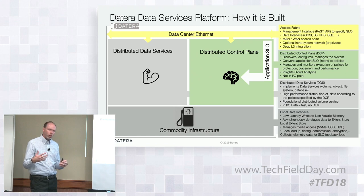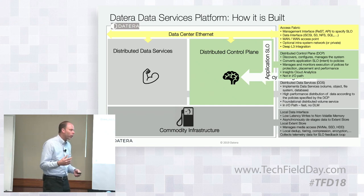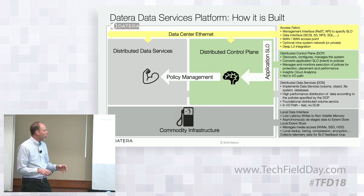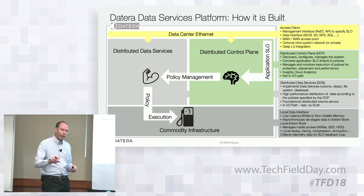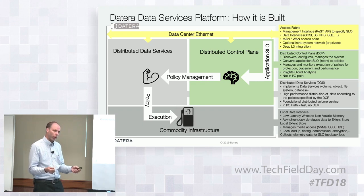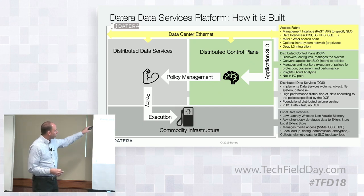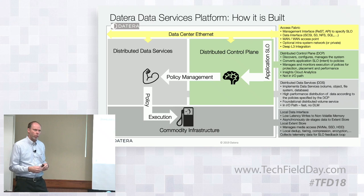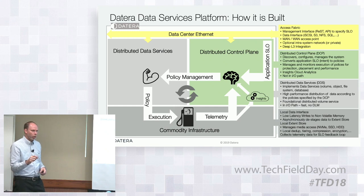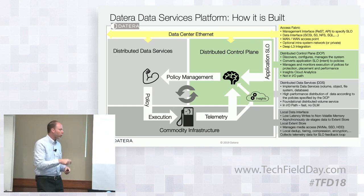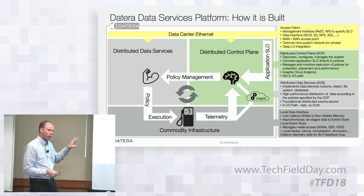The customer specifies their storage in terms of a service level objective via application templates. That gets converted into a set of policies — really the data placement — which is handed off to the data path. Those maps can be handed off at any time, so we can constantly give the system new maps and new placement locations. We collect telemetry that's given back to the control plane in a closed-loop system, and we also send that telemetry to a cloud-based analytics platform that communicates with the control plane to constantly tune and optimize.